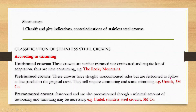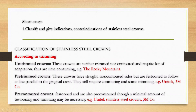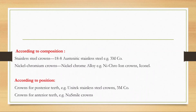Pre-trimmed crowns are festooned to follow a line parallel to the gingival crest but still require contouring and some trimming — examples are Unitek and 3M. Pre-contoured crowns require only a minimal amount of festooning and trimming; 3M also has pre-contoured crowns.